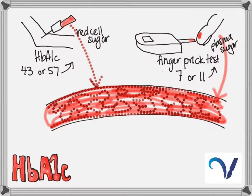Now your red cells, like I said, last for three months. So this will give you an average of what the sugar has been over the last three months. Whereas your plasma test will only test what sugar is in your bloodstream at the time. So this will give you your current sugar.